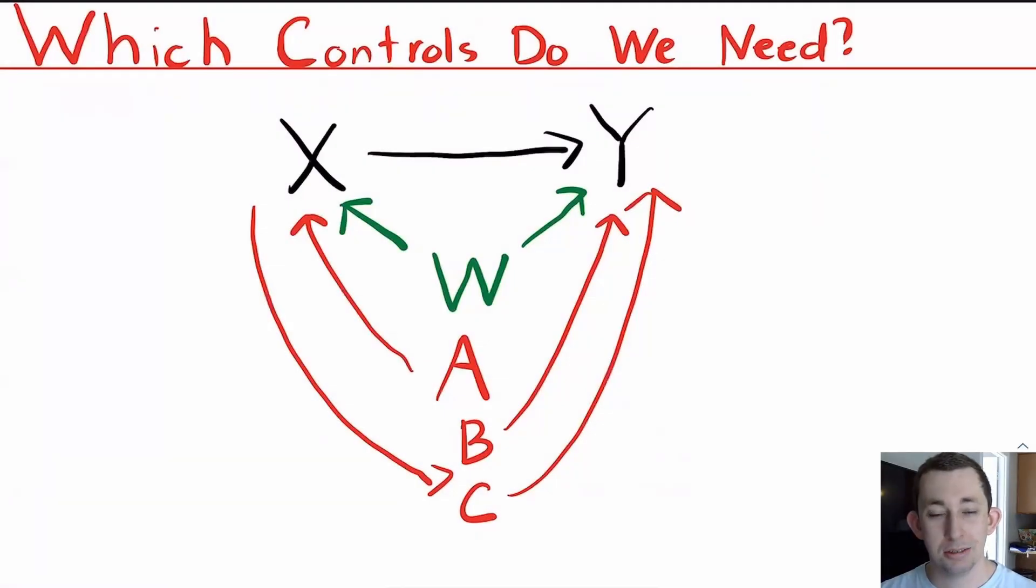I've alluded to this a little bit, but let's think a little more critically about exactly what controls we need to put in and what we don't. So here I put in X and Y and W, which we know we need to control for, and I put in some other controls. So notice that variable A, whatever A is, that only affects whether or not you get treated. It doesn't affect your stress level.